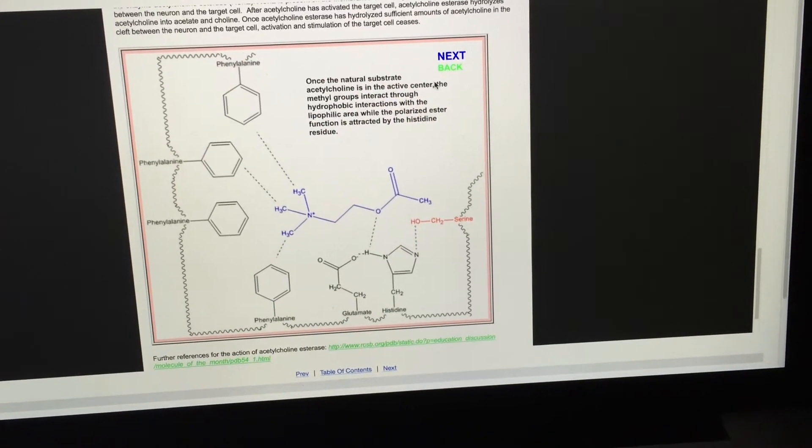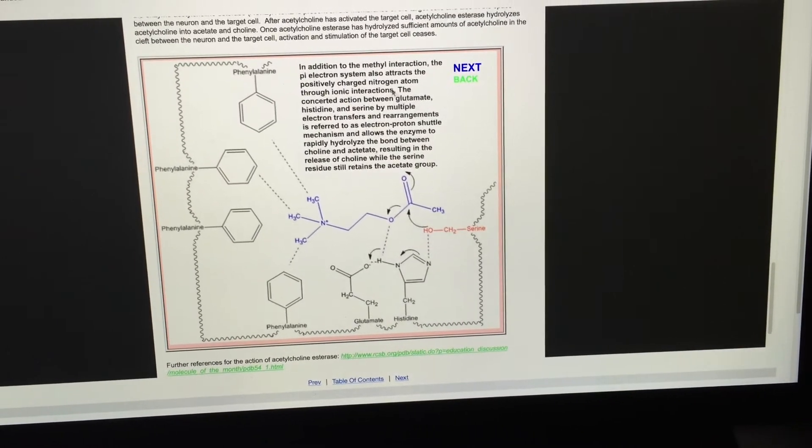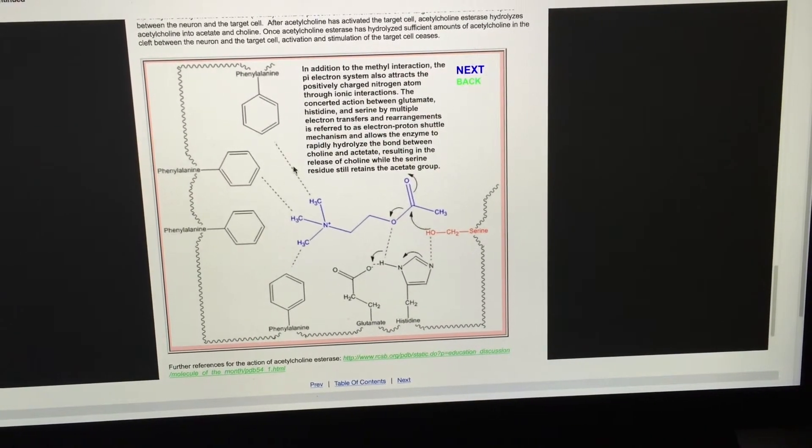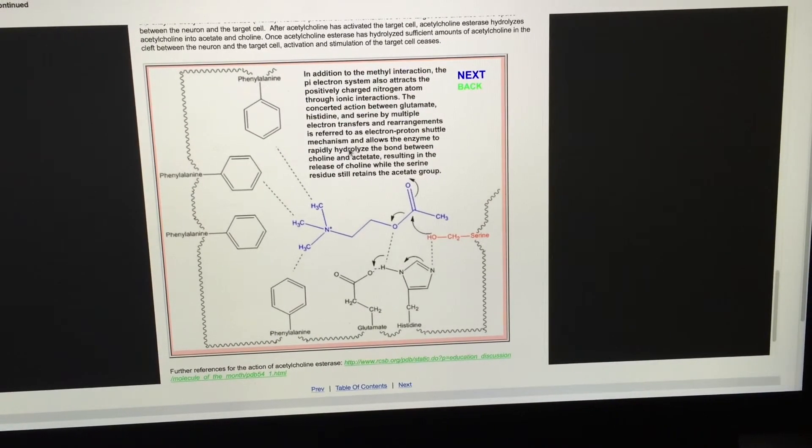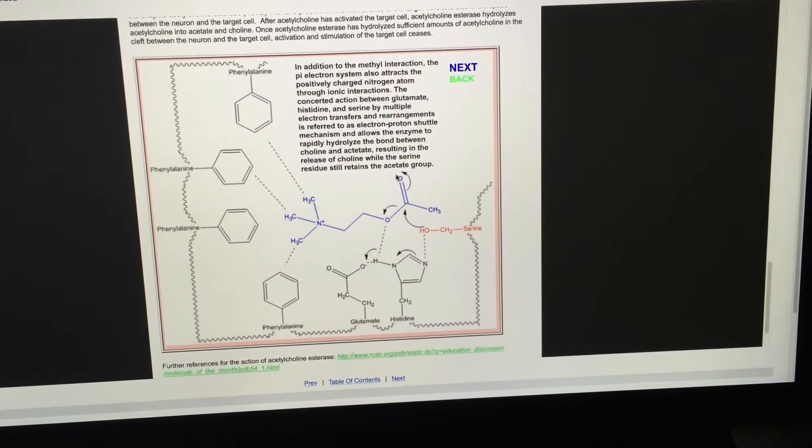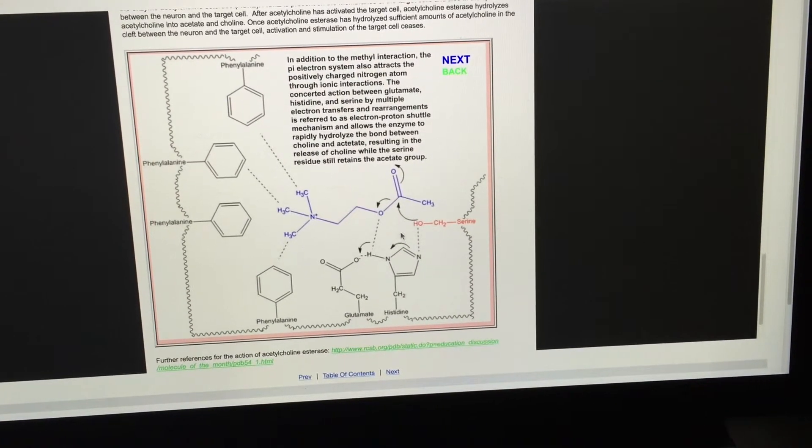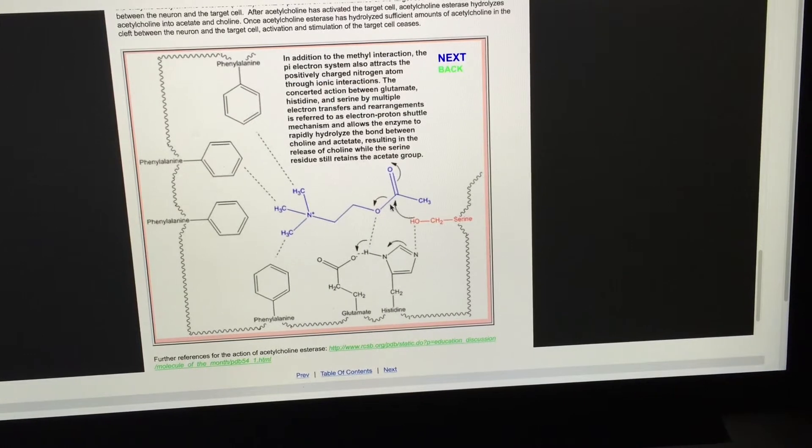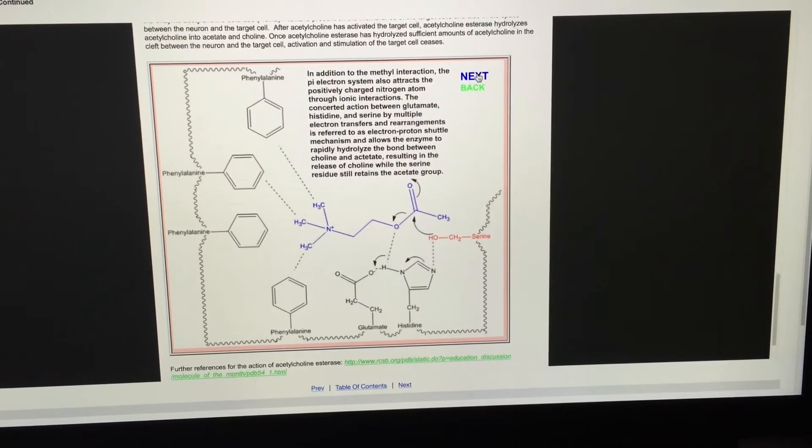Now that the acetylcholine molecule is firmly planted in place at the active site, a series of electron-proton shuffling will occur. This shuffling will set up, ultimately, for a hydrolysis reaction that will actually disassociate the acetylcholine molecule into a molecule of acetic acid and a choline group.